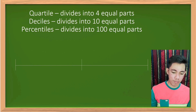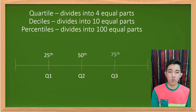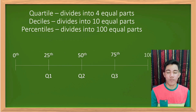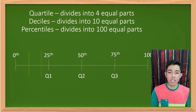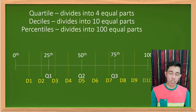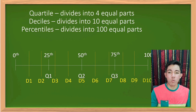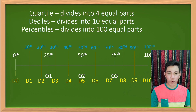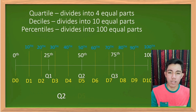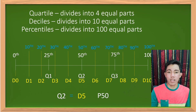We have a number line divided into 4 parts showing Q1, Q2, and Q3. Q1 is equivalent to the 25th percentile, Q2 is equivalent to the 50th percentile, and Q3 is equivalent to the 75th percentile. When the number line is divided into 10 parts, we have D1, D2, D3, D4, and so on. D1 equals the 10th percentile, D2 equals the 28th percentile. Notice that the second quartile Q2, the fifth decile D5, and the 50th percentile are all equal — they are at the center.